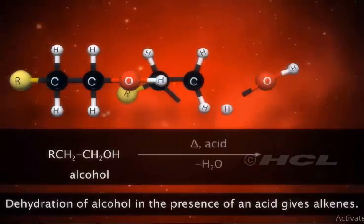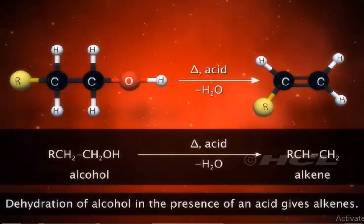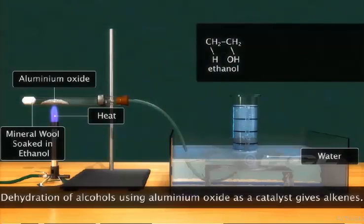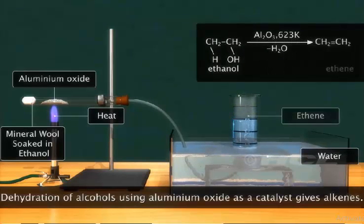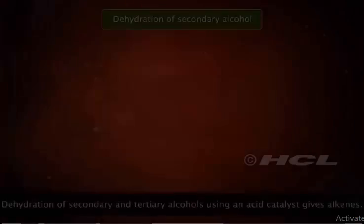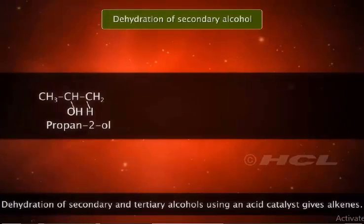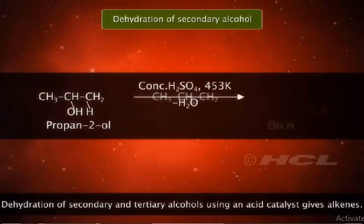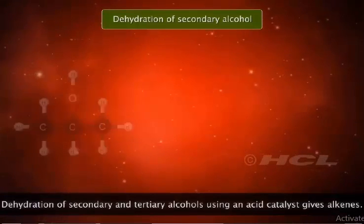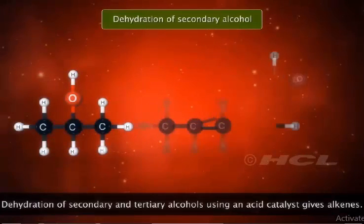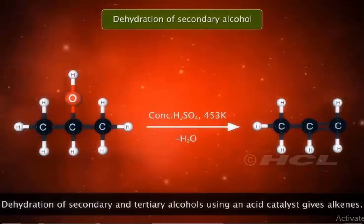Dehydration of alcohols in the presence of an acid gives alkenes. When alcohol vapors are passed over alumina at around 623 Kelvin, alkenes are formed. Secondary and tertiary alcohols are best dehydrated by acid catalysts such as concentrated sulphuric acid. For example, on dehydration, propan-2-ol gives propene.